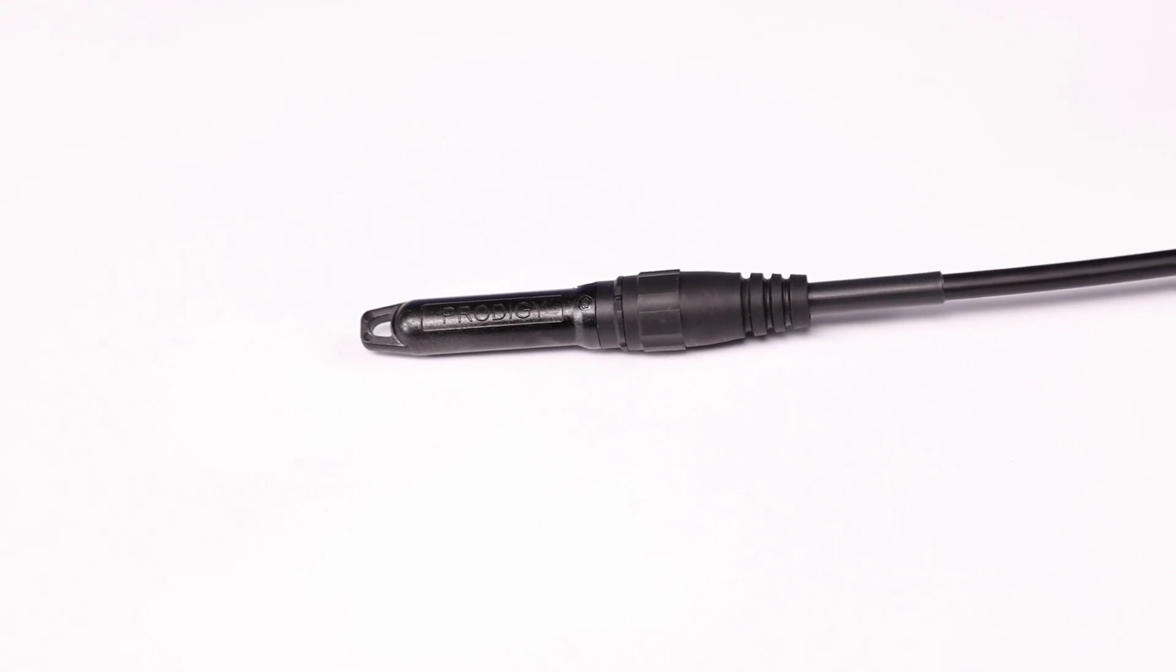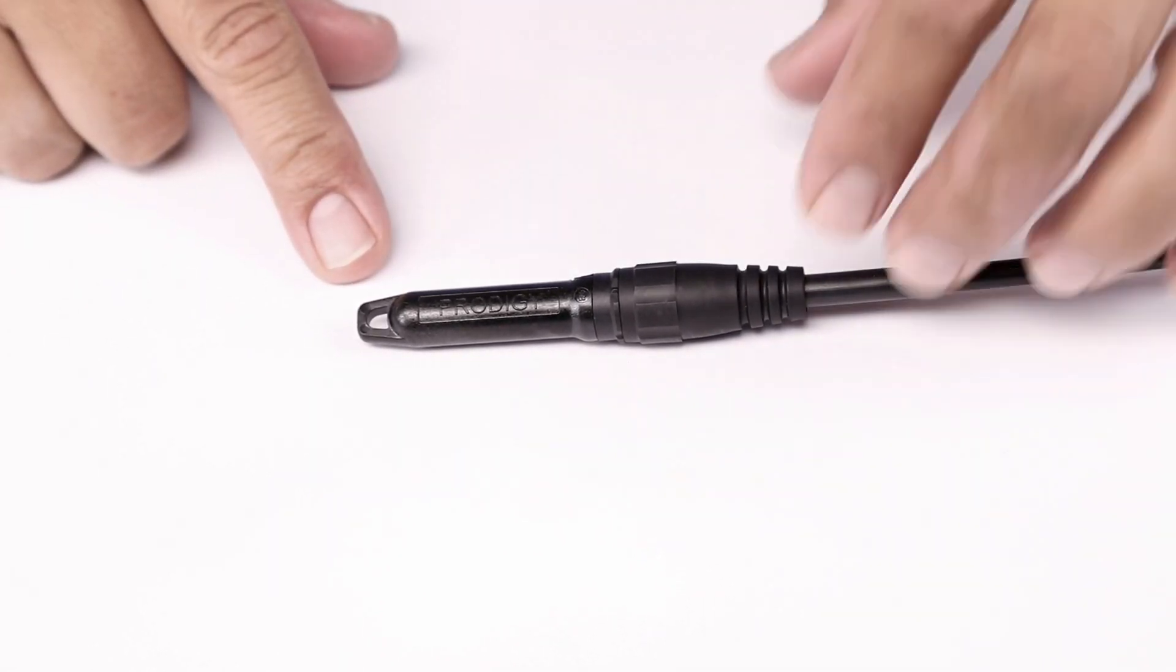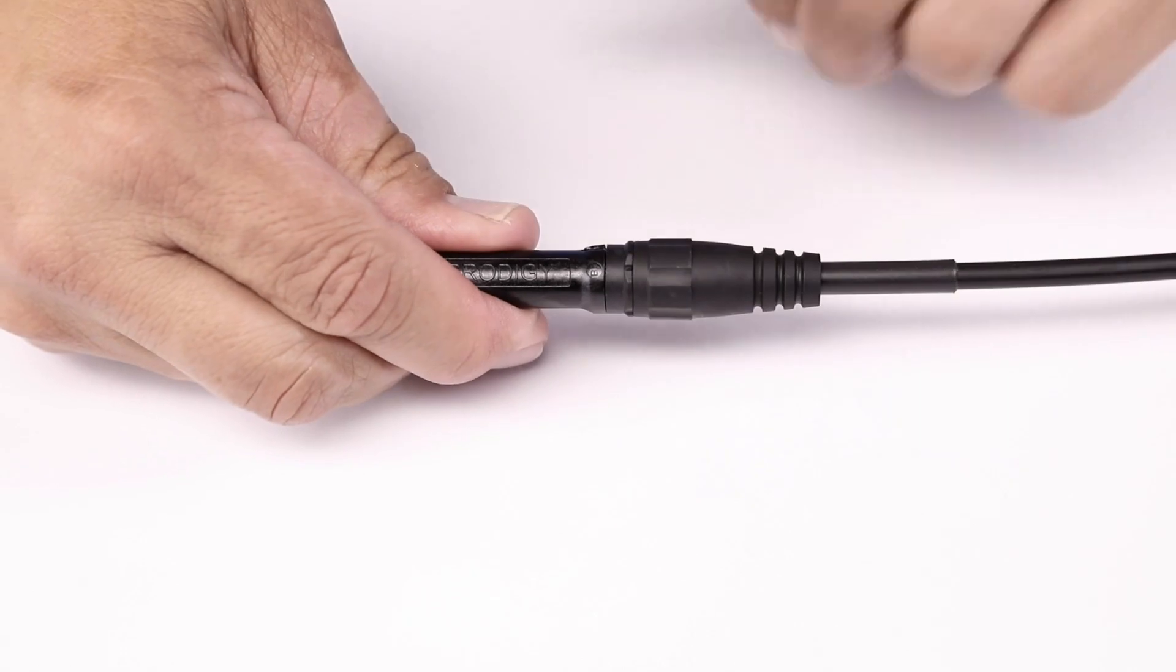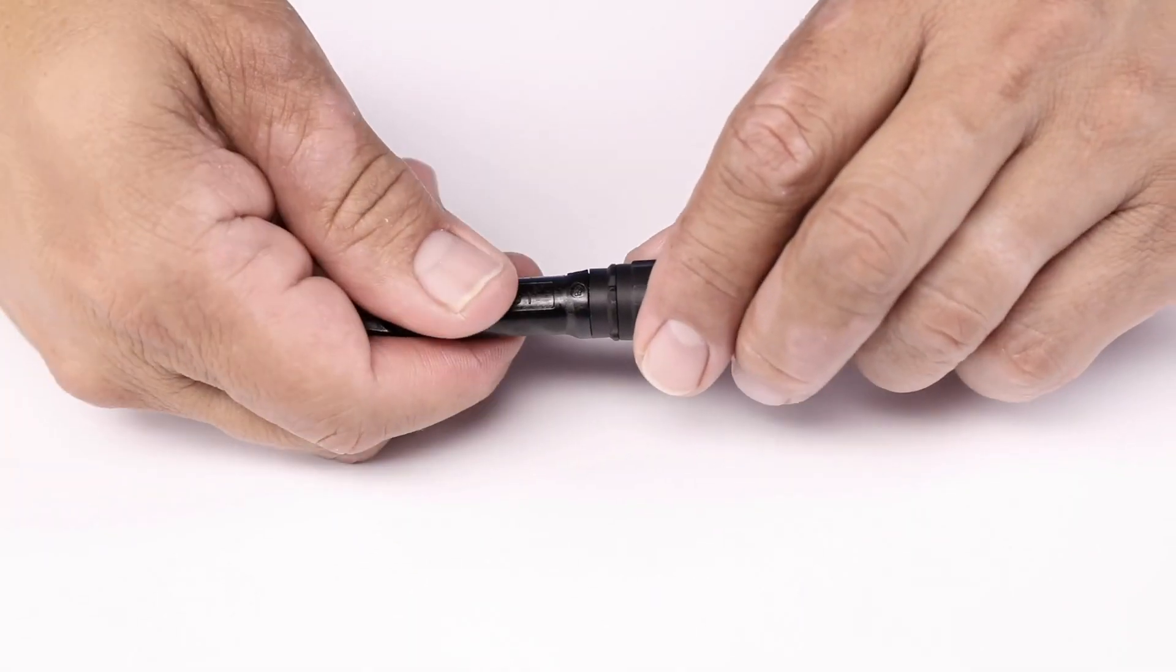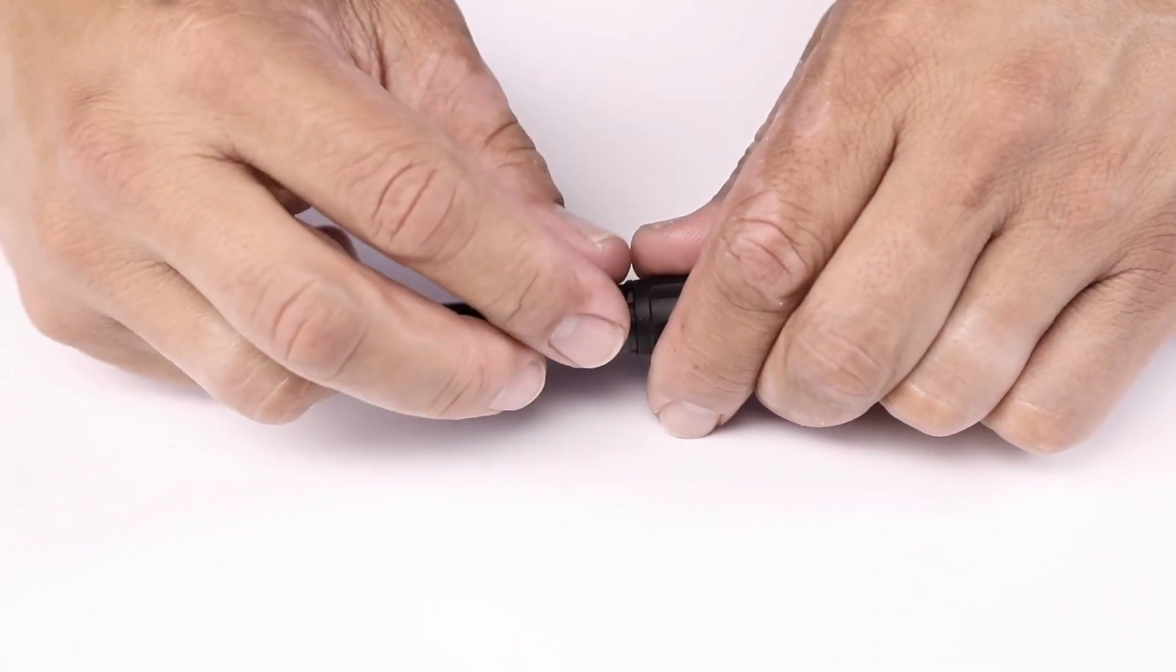Start by removing the dust cap from the Prodigy connector. Grasp the dust cap and then rotate the locking nut 45 degrees to crack and disable the dust cap stop.